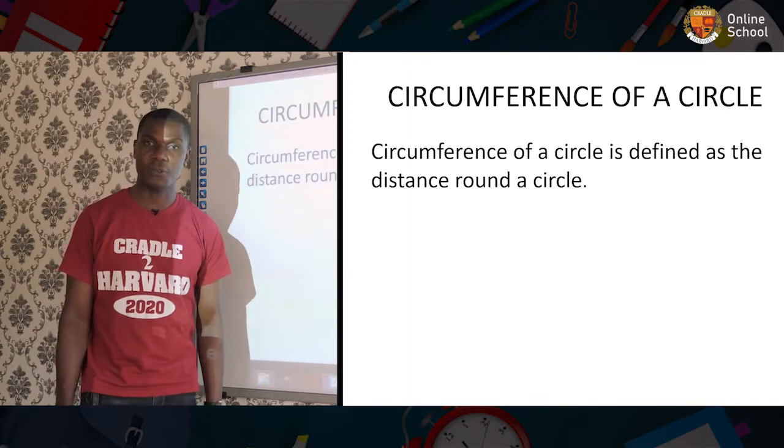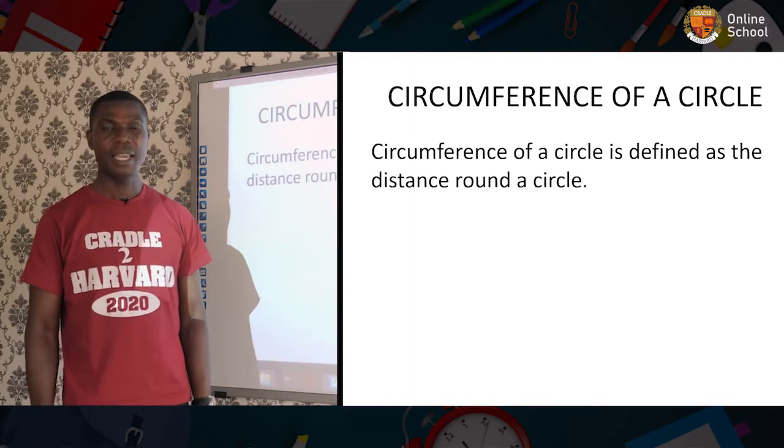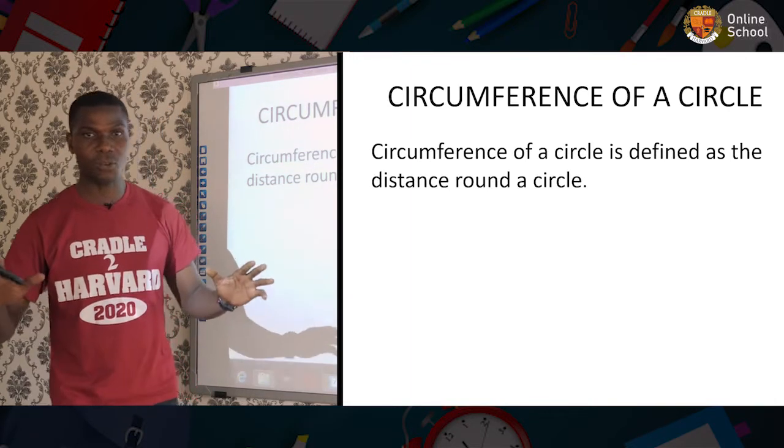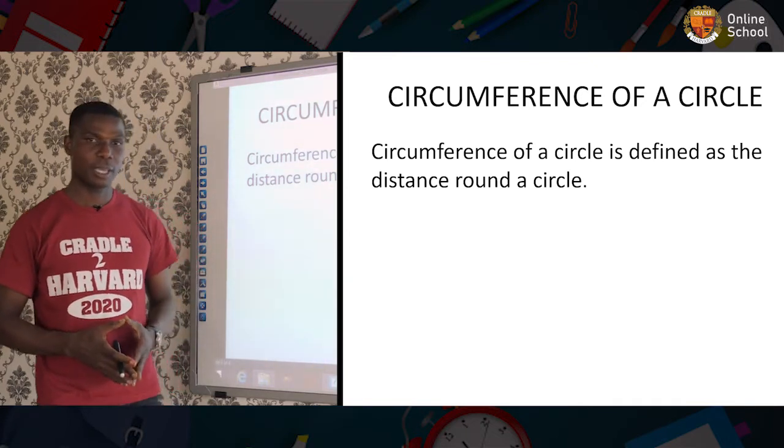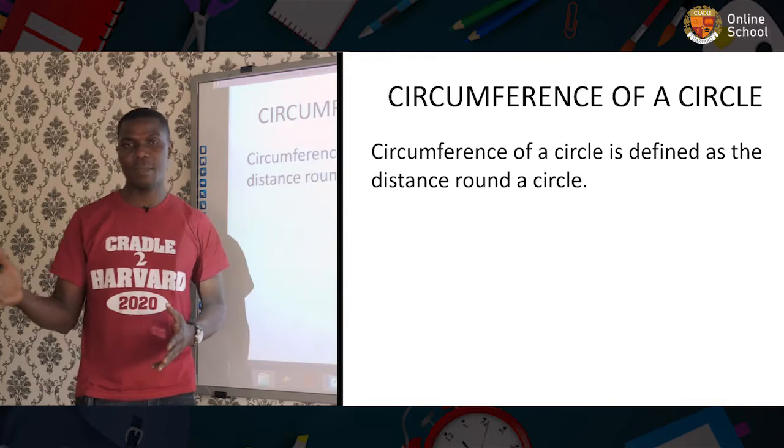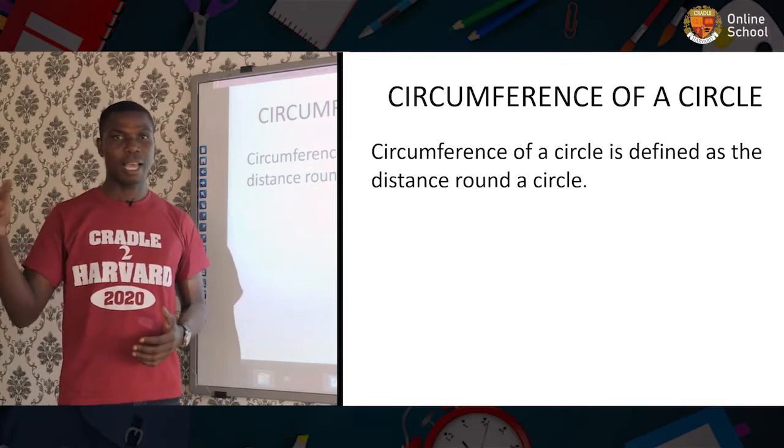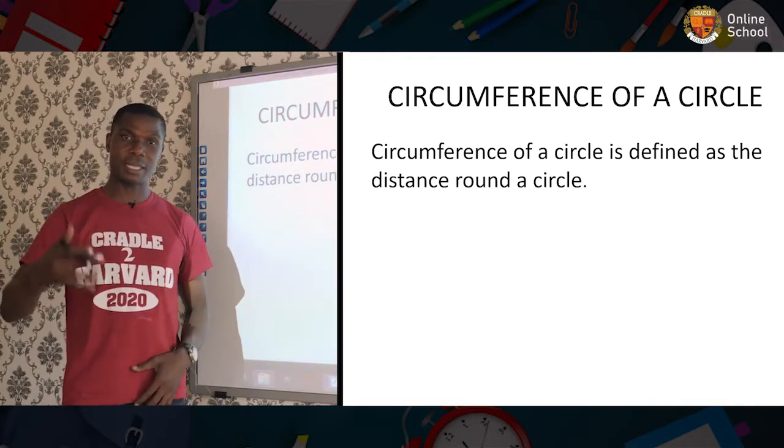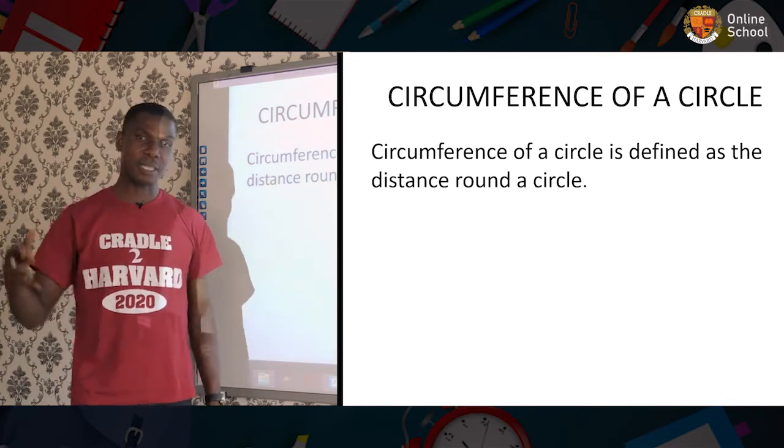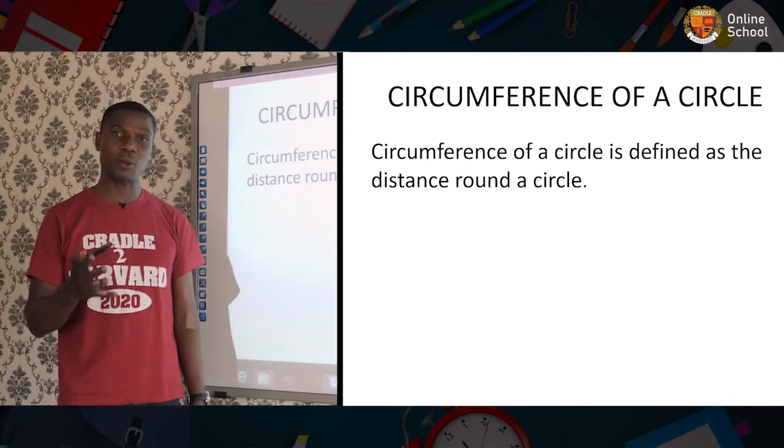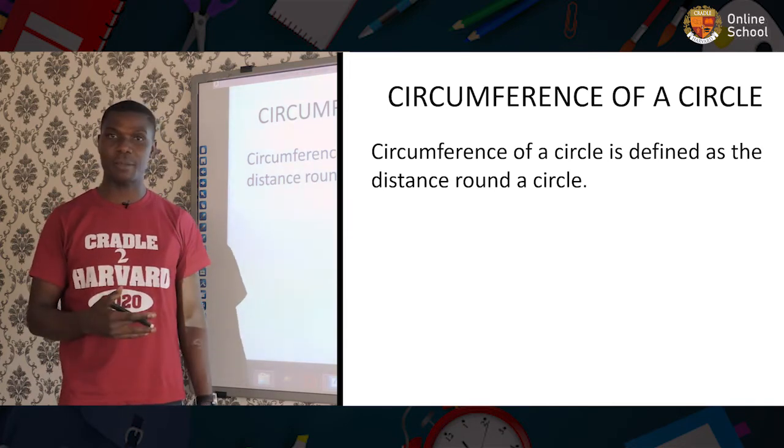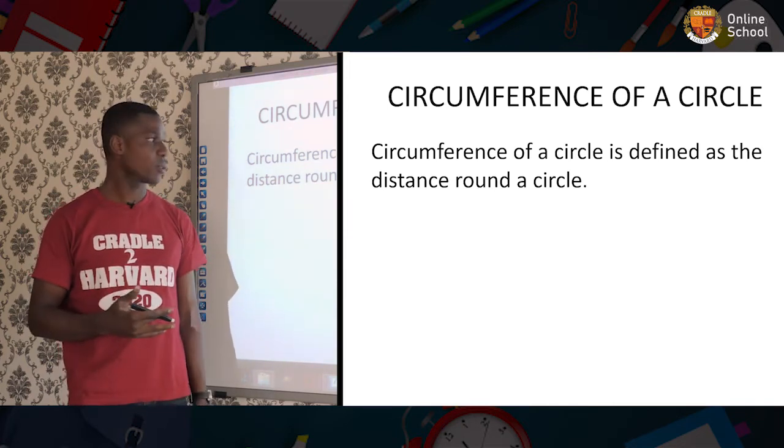What is circumference of a circle? It is simply the distance round a circle. In other plane shapes, I am sure you have been hearing of perimeter. The perimeter of a circle is simply the circumference of a circle. However, you use circumference for circular shapes.